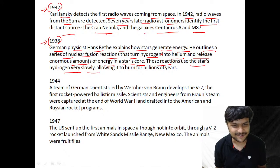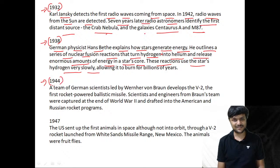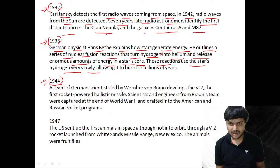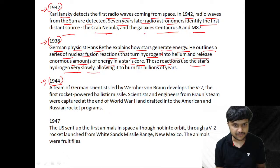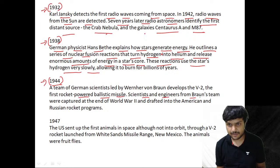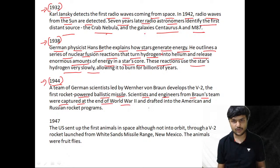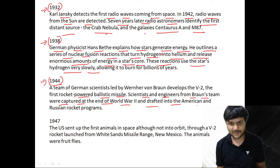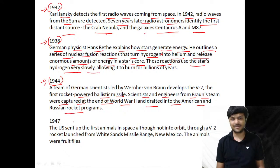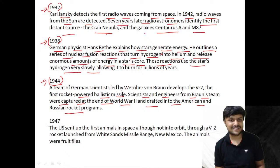In 1944, a team of German scientists led by Wernher von Braun develops the V2, the first rocket-powered ballistic missile. Scientists and engineers from von Braun's team were captured at the end of World War II and drafted into American and Russian rocket programs.